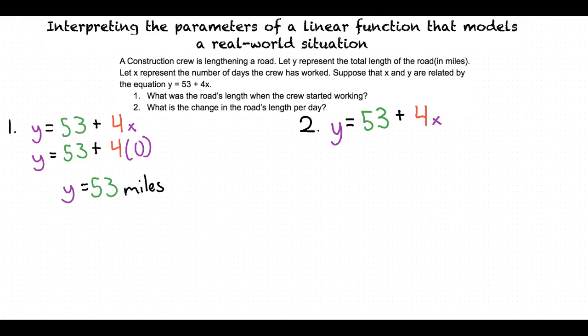The slope? Exactly. Our slope in this word problem represents the change in the road's length per day. This means that our answer for the second question is 4 miles per day.